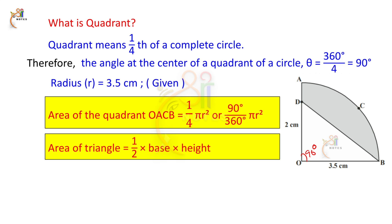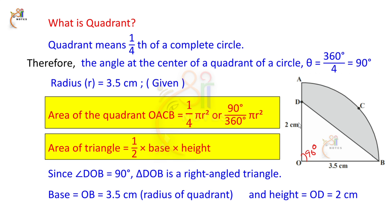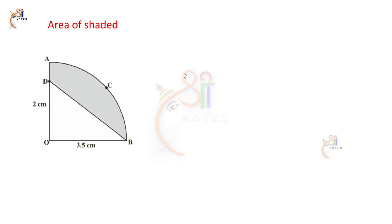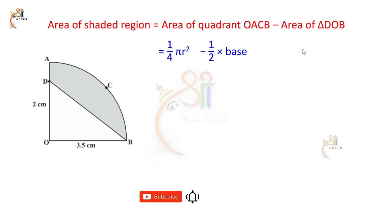The area of the triangle is equal to 1 by 2 into base into height. We have a right angle triangle. The base OB equals 3.5 centimeters and the height OD equals 2 centimeters. The area of the shaded region equals the area of quadrant OACB minus the area of triangle DOB.